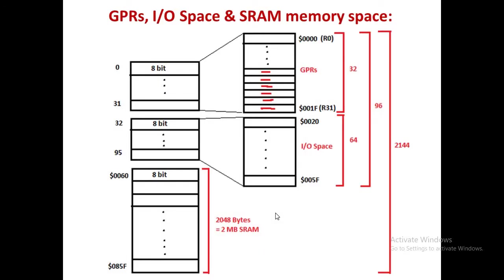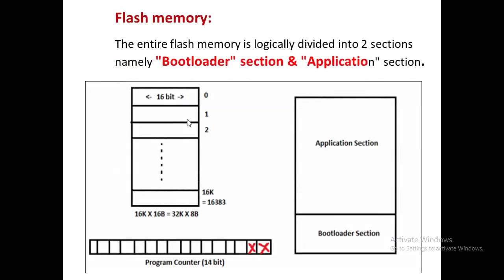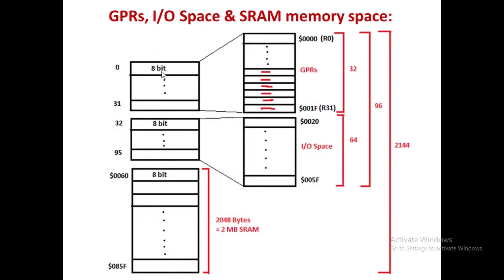Now regarding the SRAM section, or the data memory part: the data memory is actually 2,144 bytes and organized byte-wise. In program memory it was 16 bits, but in data memory it is 8 bits — everything is byte-wise. Data memory is 2 KB in size, and inside it we have different parts.